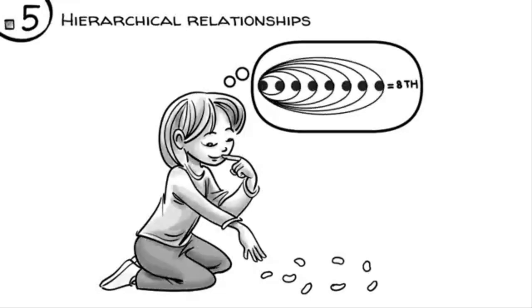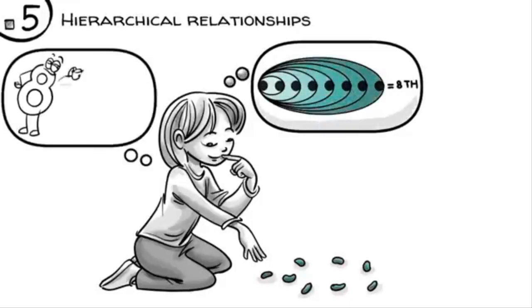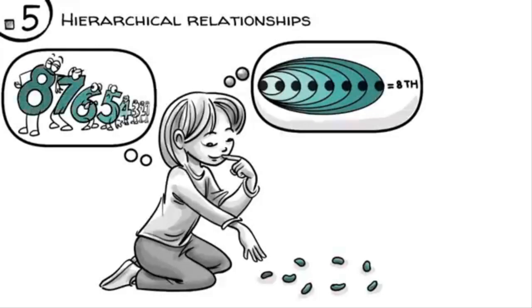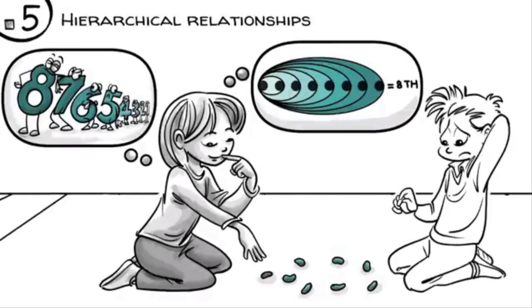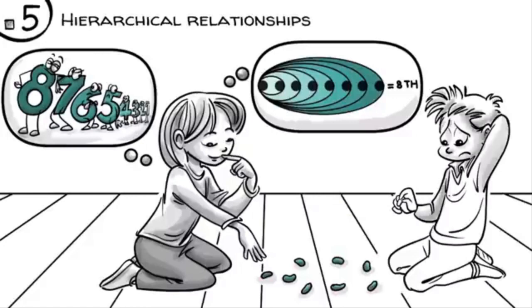In other words, eight always includes one, two, three, four, five, six, seven. The idea of eight is therefore a hierarchical relationship between the eighth object and all those preceding it. If we don't learn to do this sort of abstraction by doing lots of math in our heads, we won't be able to form a solid foundation for arithmetic.